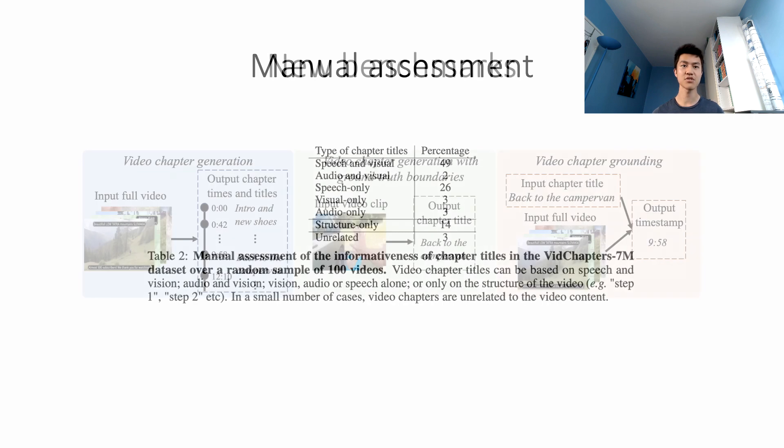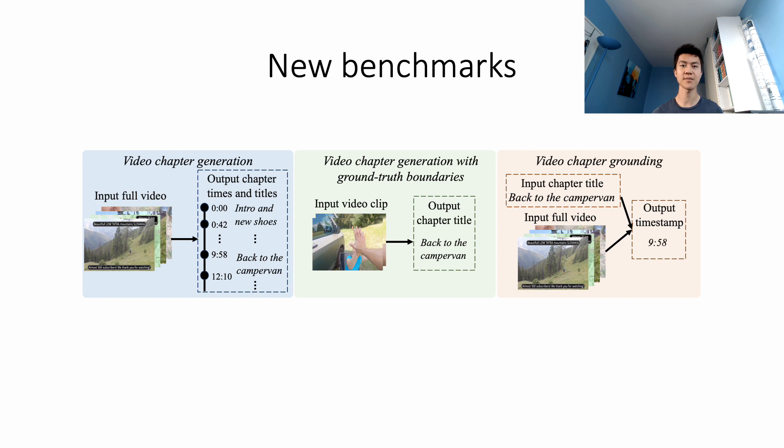The video chapter generation task consists of temporally segmenting the video and generating a chapter title for each segment. To further dissect the problem, we also define two variants of this task. Video chapter generation given ground truth boundaries, which requires generating a chapter title given an annotated video segment. And video chapter grounding, which requires localizing the temporal boundaries of a chapter given its annotated title.